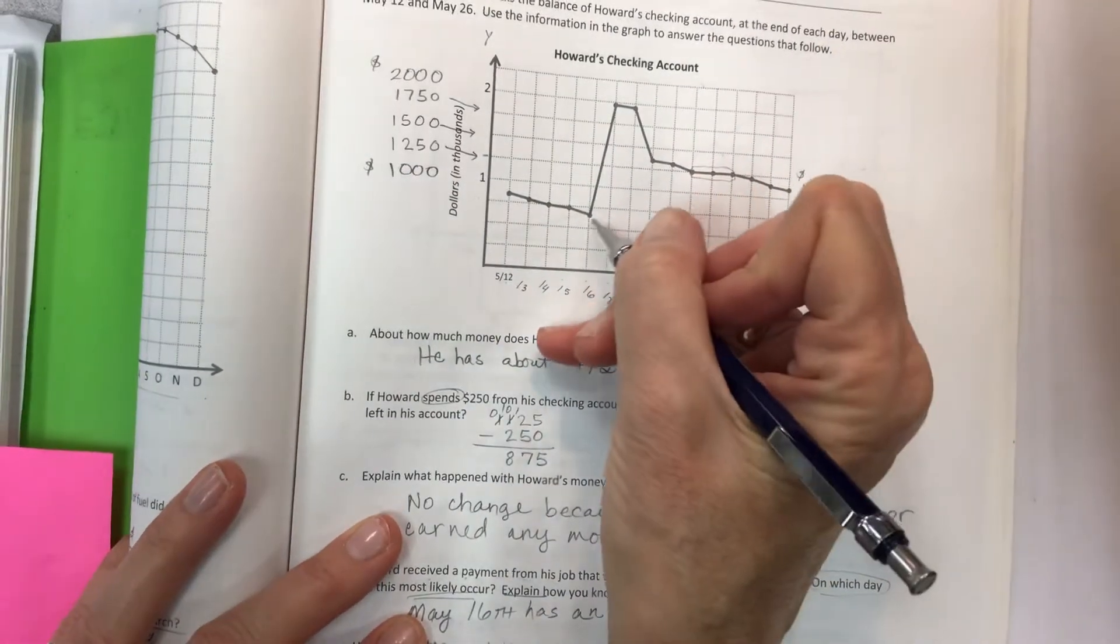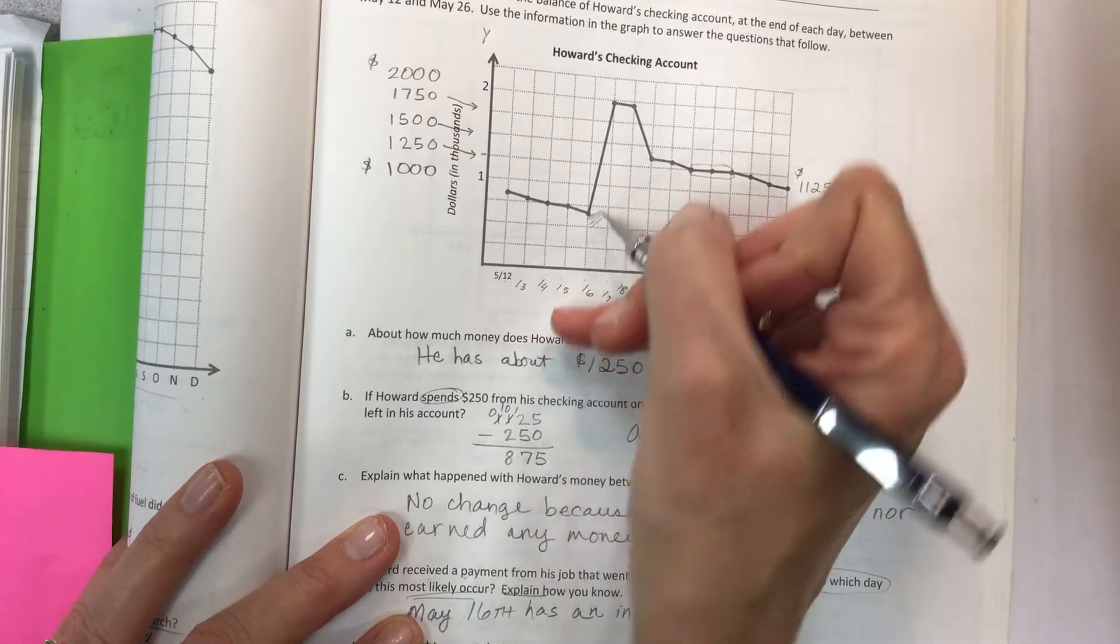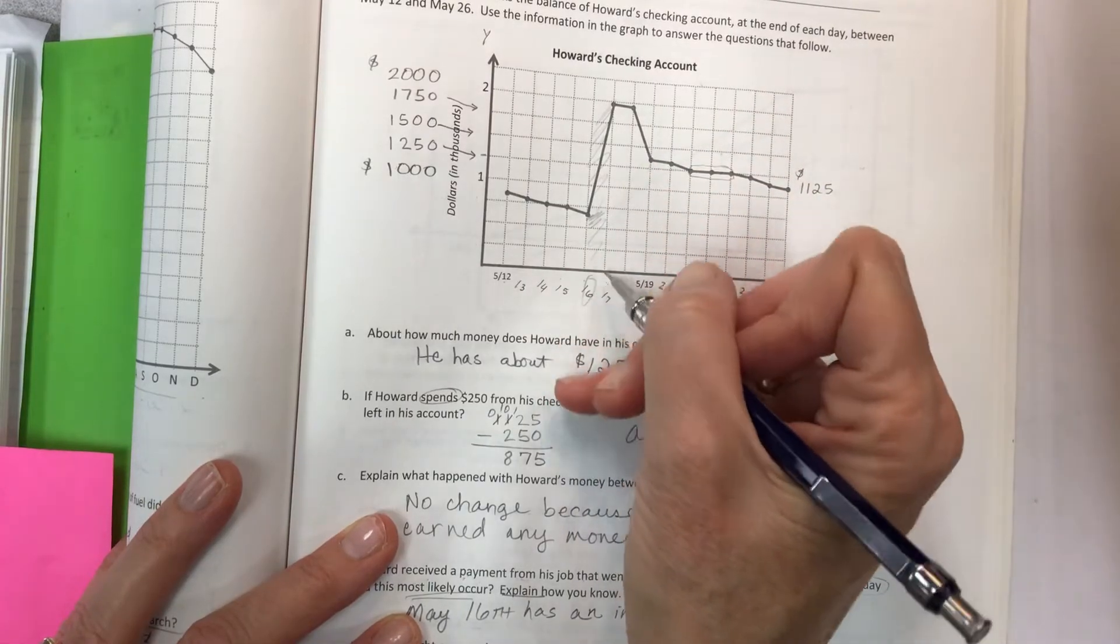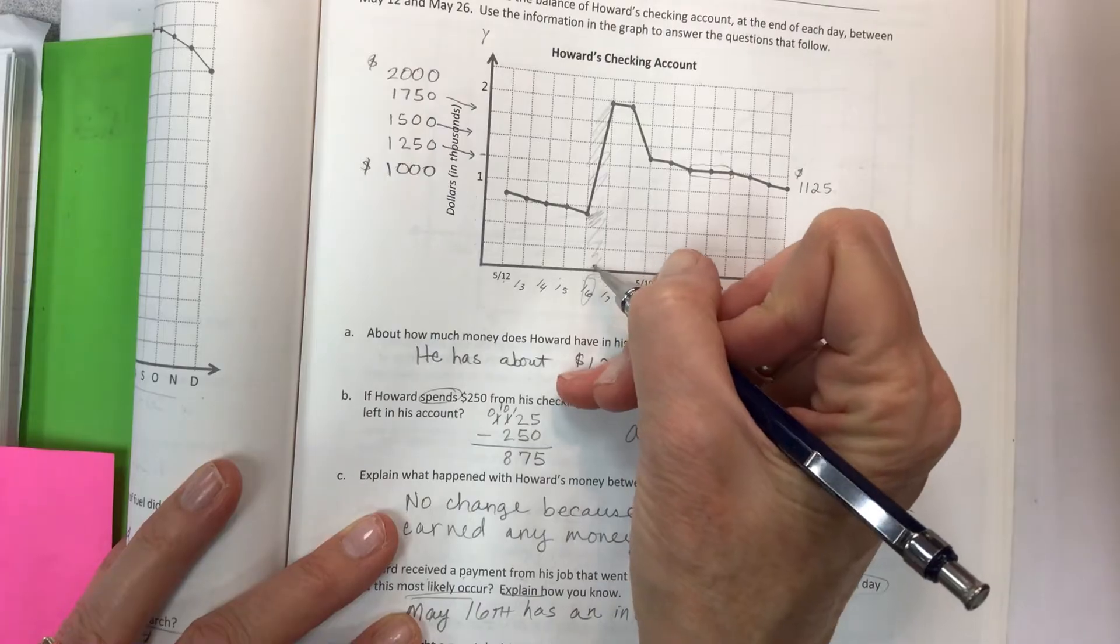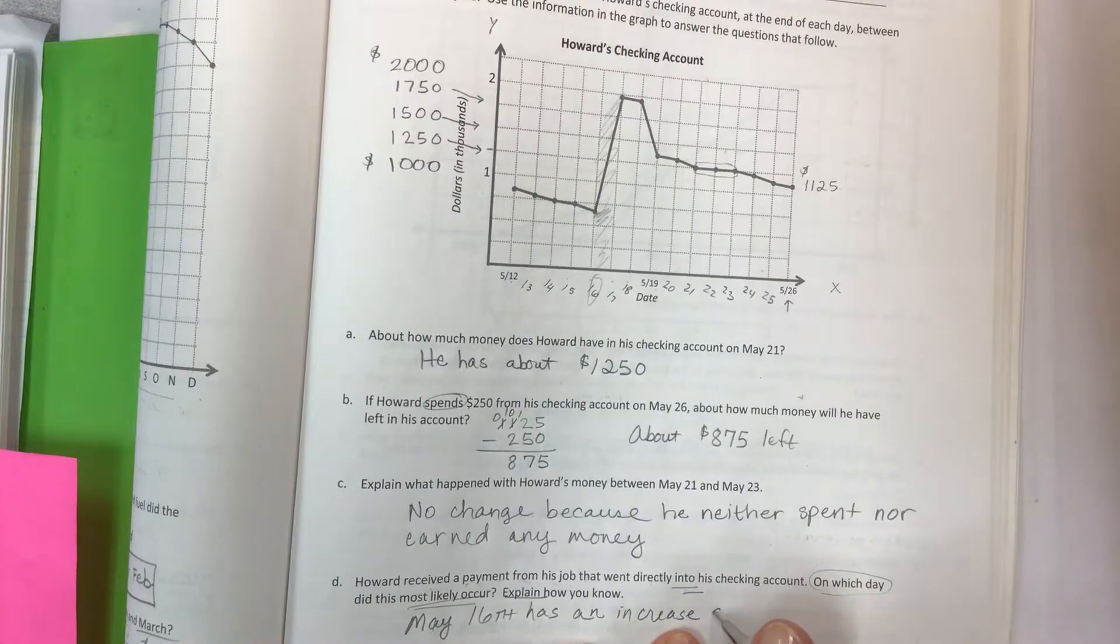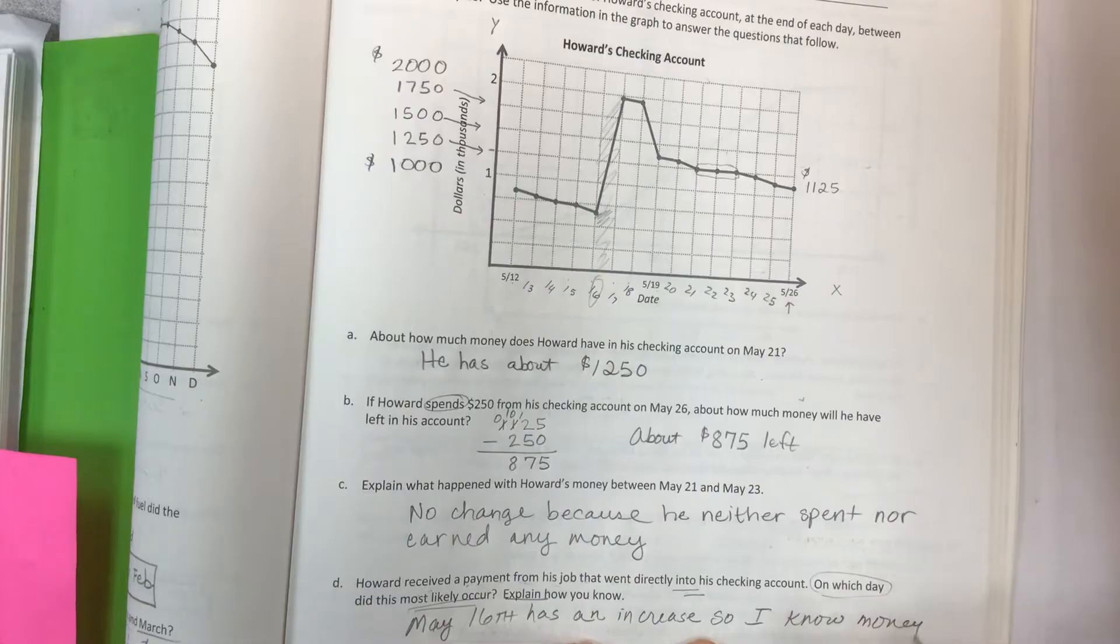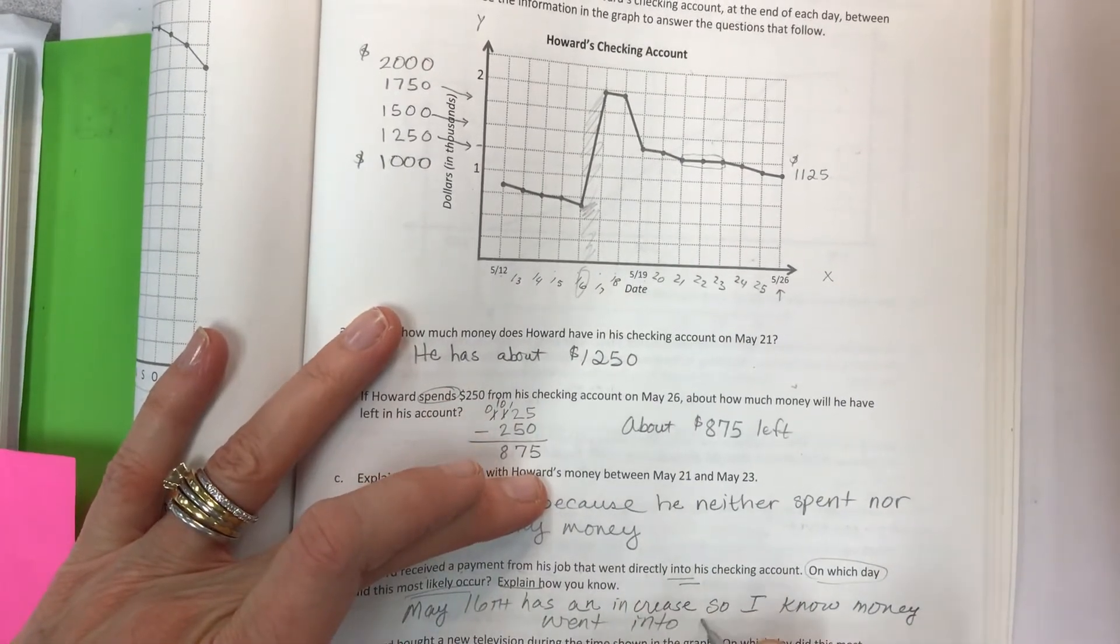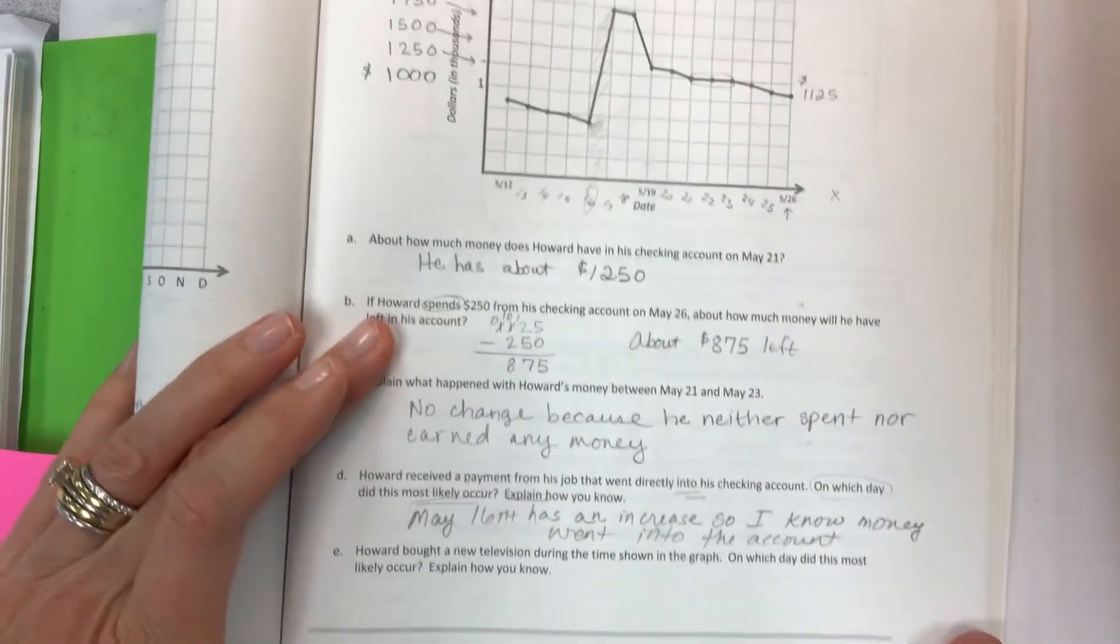This is the day. This is the start of the opening of the business day right here, and then this is the close of the business day. So this is all the 16th. All this information belongs to what happens on the 16th. Remember, time is moving forward. So May 16th has an increase, so I know money went in or into the account. Justify it with your explanation.